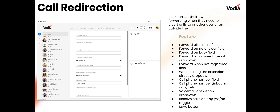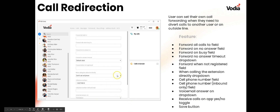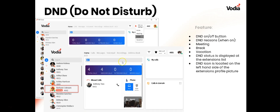For call redirection, users can set their own call forwarding to divert calls to another user or outside line by clicking the forwarding icon. Options include forwarding all calls, calls when busy, or calls on no answer — with configurable no-answer timeout using either the admin default or a custom value. You can also forward when not registered, forward direct calls to your cell phone, choose inbound-only forwarding, set your cell phone number, control whether voicemail answers on the app or phone, whether you're receiving calls on the app, and where voicemail goes. Hit Save at the bottom when done.